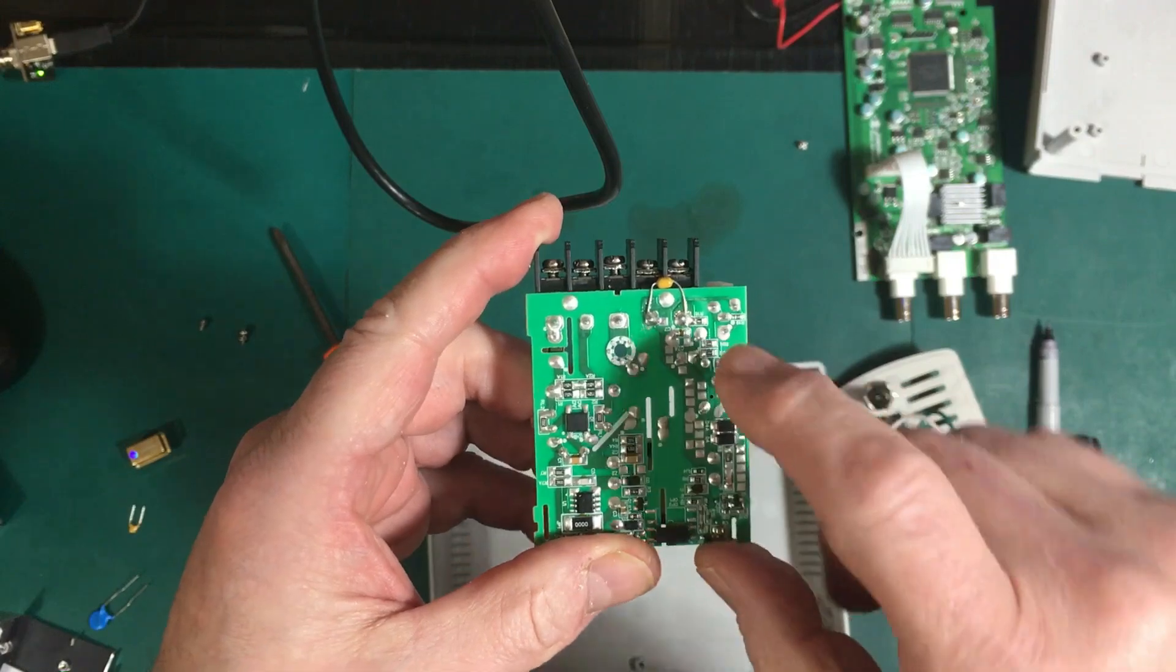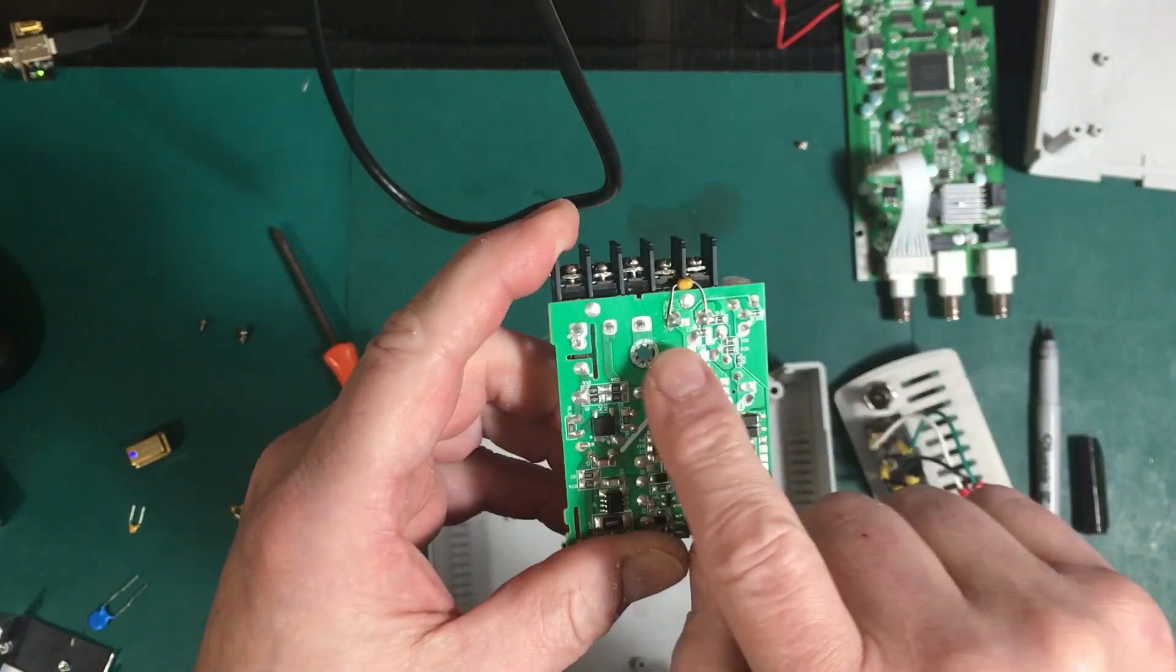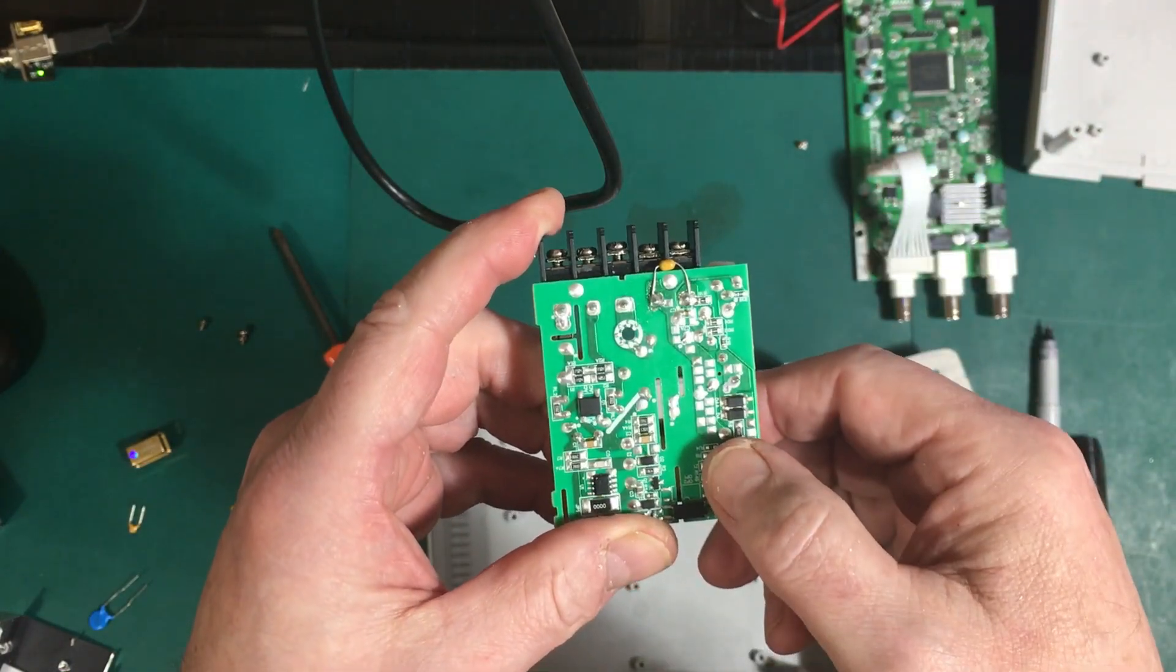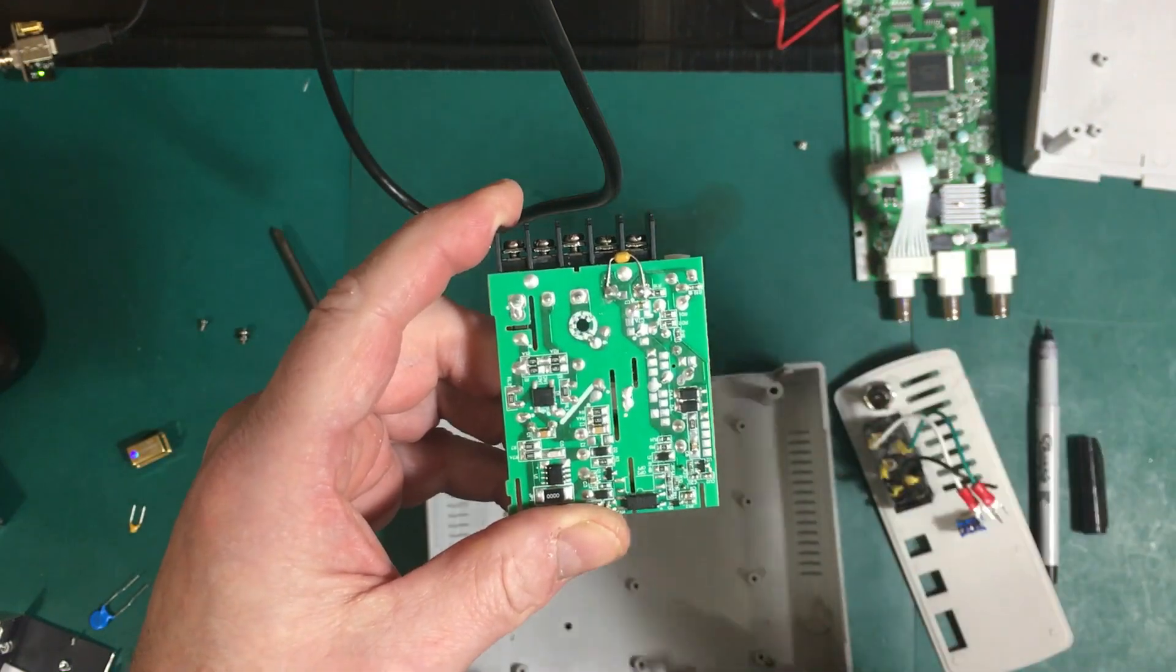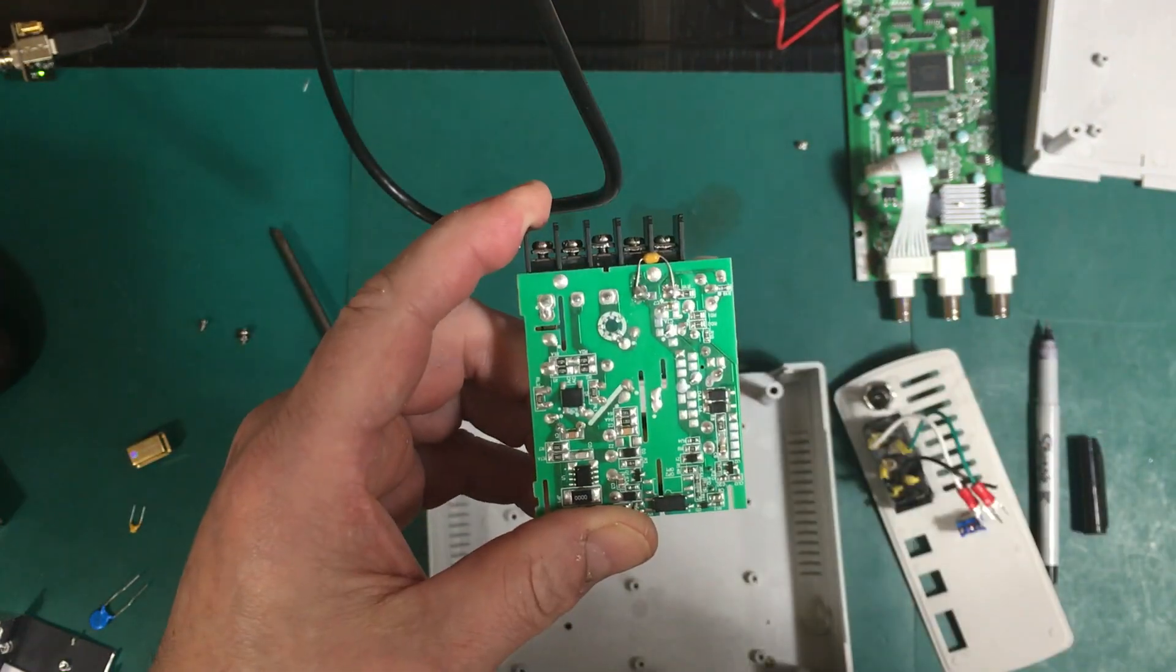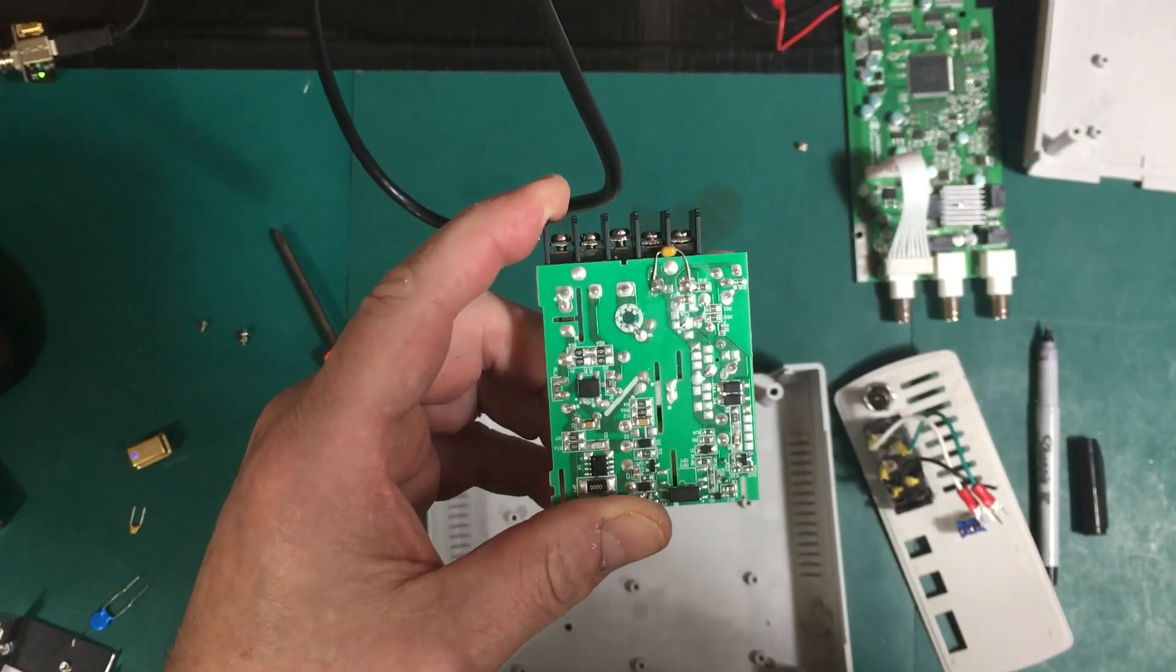I've gone ahead and mounted that 0.1 microfarad capacitor directly to the output terminals on the circuit board. That'll get it as close as possible to where it needs to be. Let's start assembling all this up.